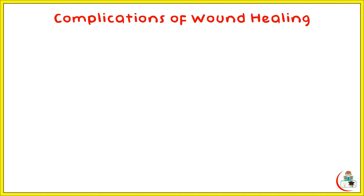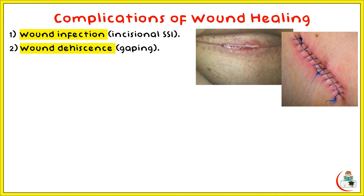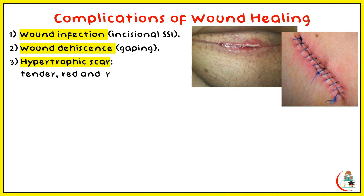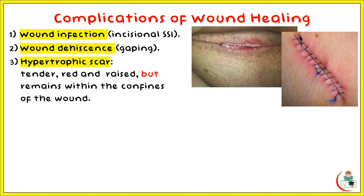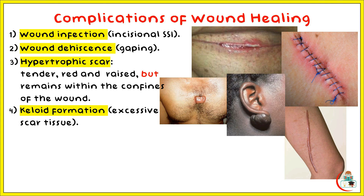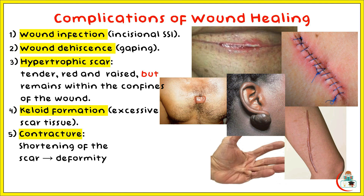Complications of wound healing are: number one, wound infection or incisional surgical site infection. Number two, wound dehiscence or gaping — in abdominal wounds this may cause burst abdomen or later incisional hernia. Number three, hypertrophic scar, which is tender, red, and raised, but remains within the confines of the wound. Number four, keloid formation or excessive scar tissue, which is very itchy, raised, and extends beyond the confines of the original wound — in other words, overhanging. Number five, contracture, which is shortening of the scar tissue, different from contraction of a muscle; if overlying a joint, it leads to deformity. The last complication is malignant transformation of a chronic wound due to prolonged irritation, called a Marjolin's ulcer.